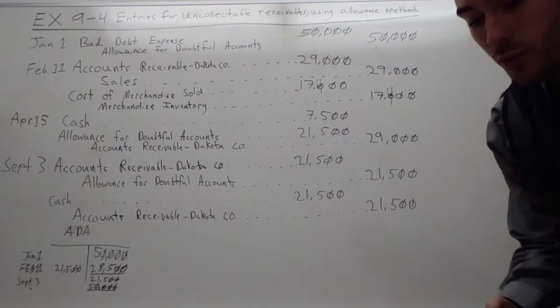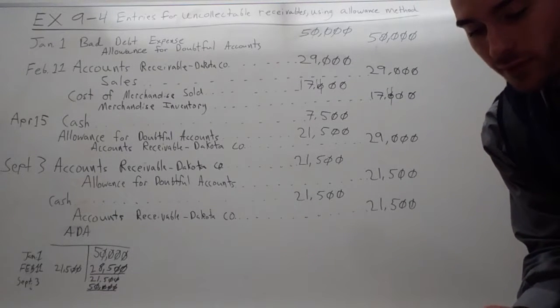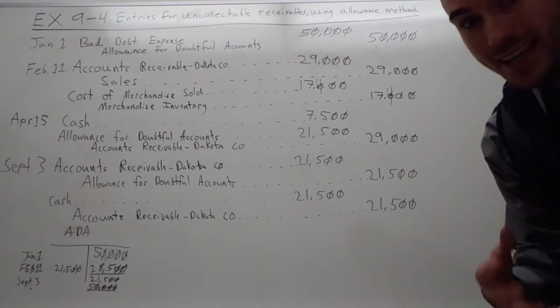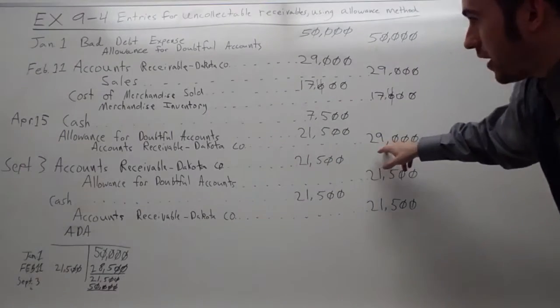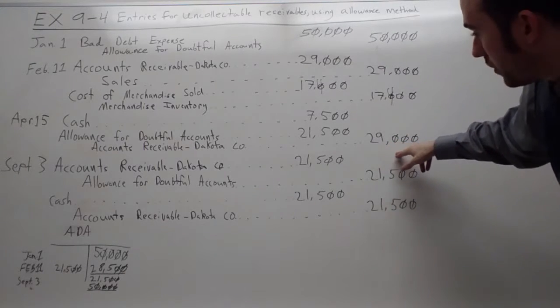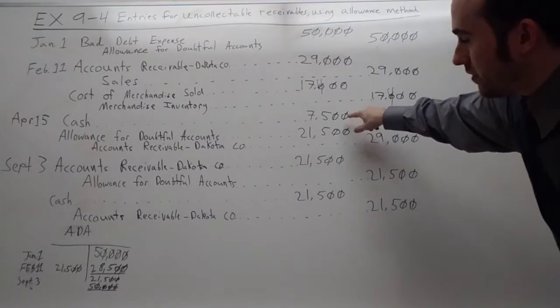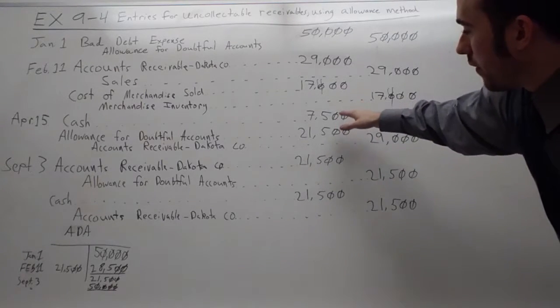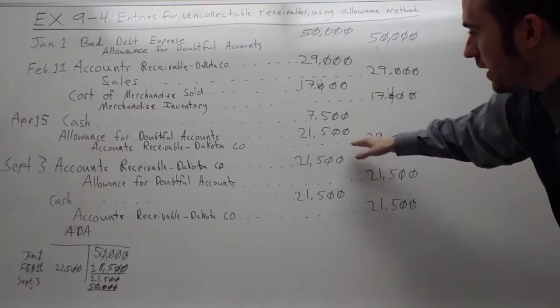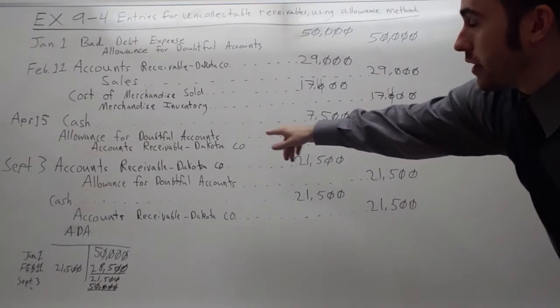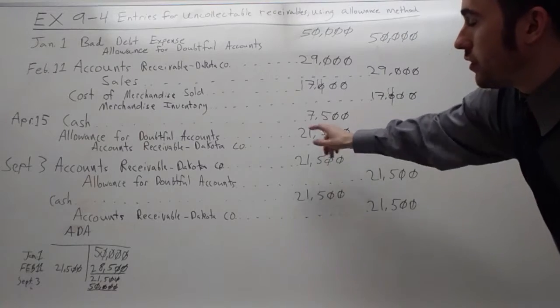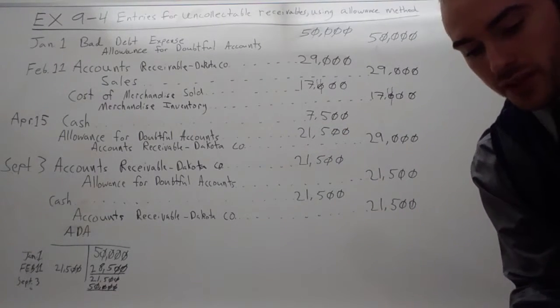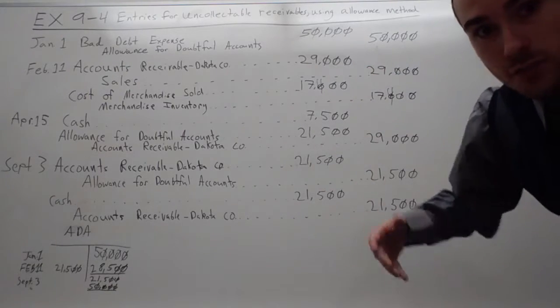Next, April 15th, we were able to get $7,500 cash from them. But then they told us they can't pay the rest. So we take off their whole accounts receivable off the books for $29,000. But up here on the debit, we debit $7,500 cash. And then the difference between that and what we didn't get was $21,500, which is what we're going to debit for allowance for doubtful accounts, which is going to lower what we've estimated.